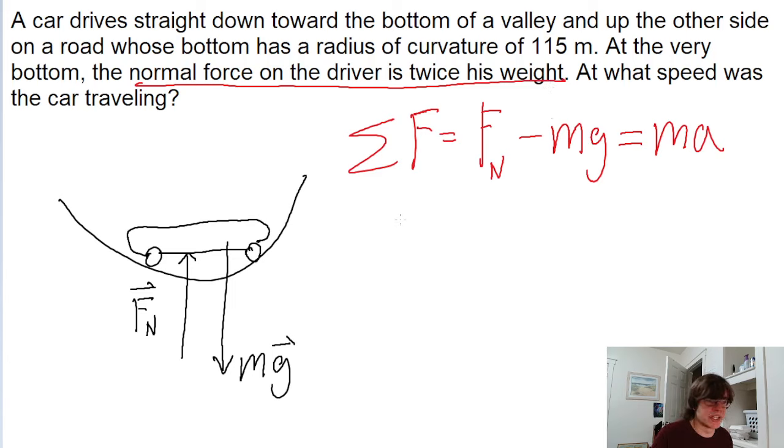So the normal force can be written as 2 times M G minus M G, except we've got 2 M G minus M G. So we can just factor that out and we just have 1 M G.